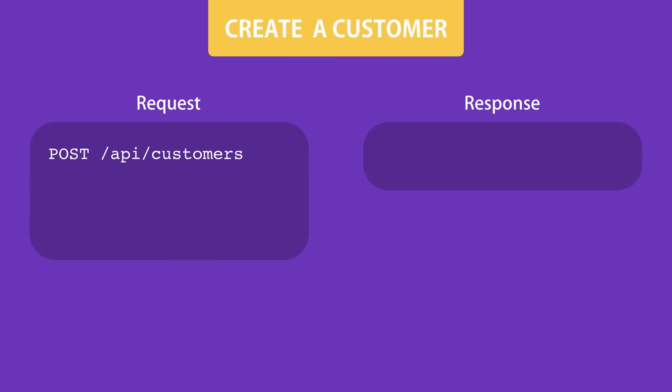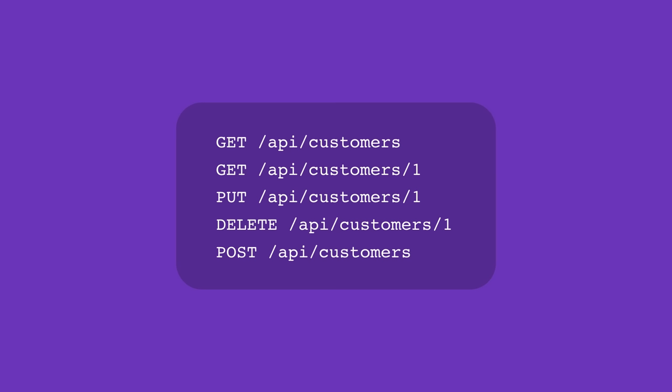To create a customer, send an HTTP POST request to this endpoint. Because we're adding a new customer, we're not dealing with a specific customer, so there's no ID in the address. We're posting a new customer to the collection, so we include the customer object in the body of the request. The server gets this object and creates the customer. This is the RESTful convention — expose resources using meaningful addresses and support CRUD operations using standard HTTP methods.